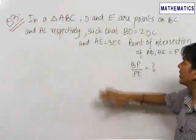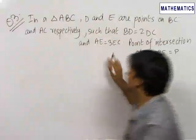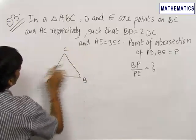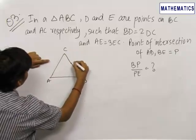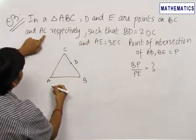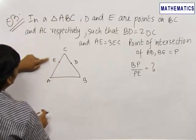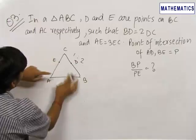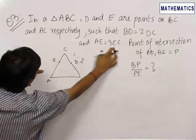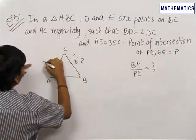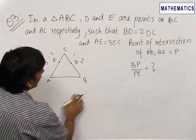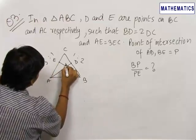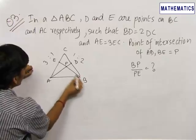In the third question, we have been given a triangle ABC. D and E are points on BC and AC respectively. Let us draw the diagram. D is a point on BC and E is a point on AC such that BD is equal to 2 times DC. Therefore, the ratio in which D divides CB is 1 is to 2. Again, AE is equal to 3 times EC, so that ratio is 3 is to 1. The point of intersection of AD and BE is given as P. We need to find out the ratio BP upon PE.